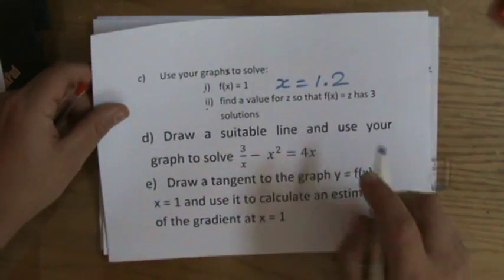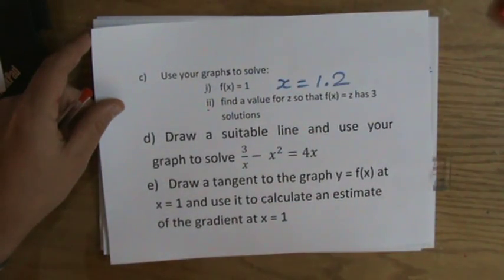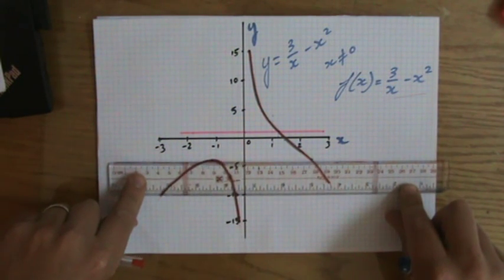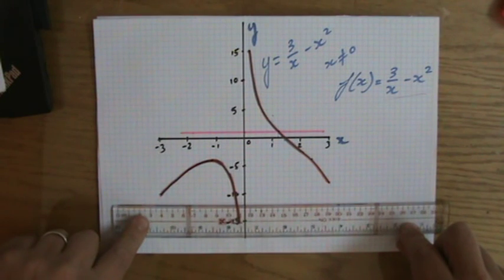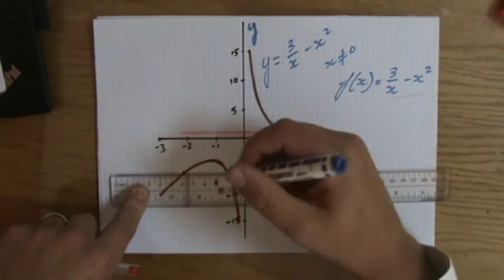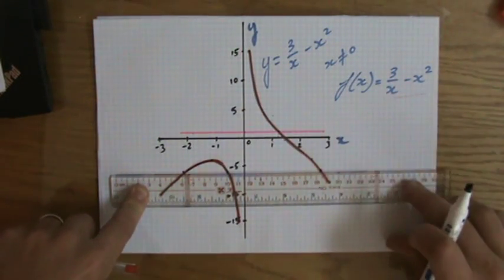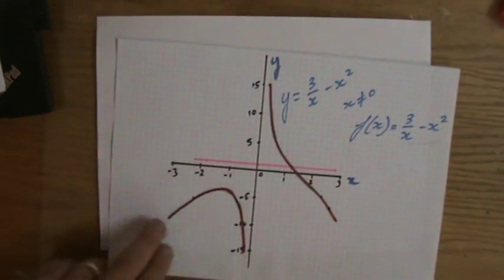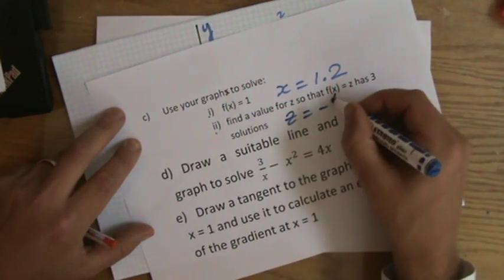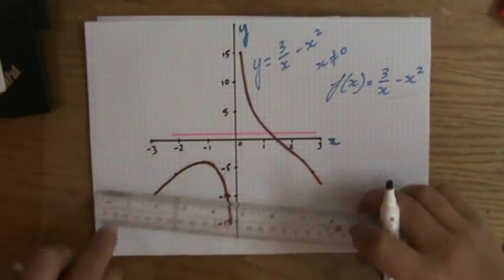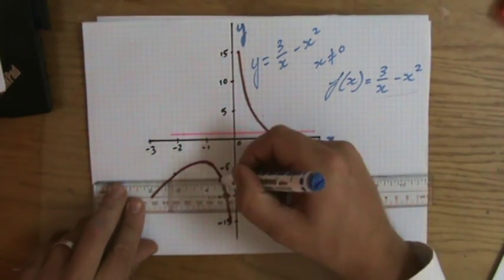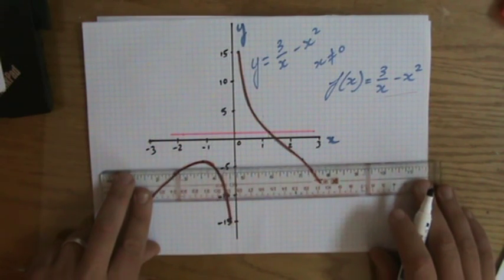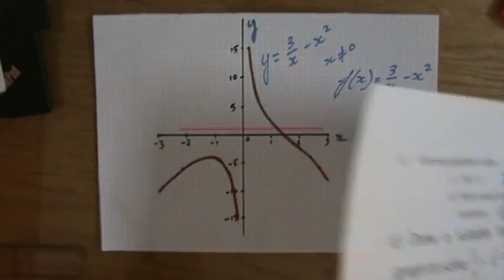So the question is: give me a number for z that gives three solutions. Looking at the graph, here I have three solutions — one, two, three. For instance, when z = -6 you have three solutions. You could also take -7 or -5, so there's a range of values possible for three solutions.